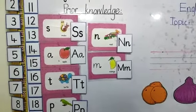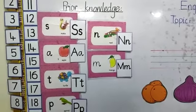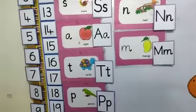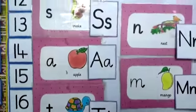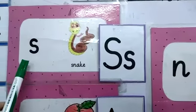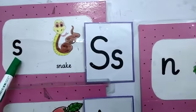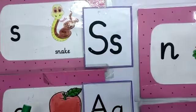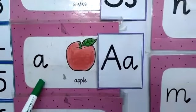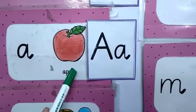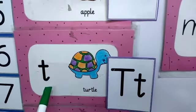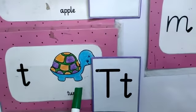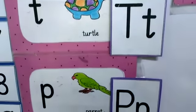Before that, we'll do the recap of the letters which we've done before. So look at here. What is this? Which letter is this? Yes, it's S, snake. Well done. Which letter is this? Yes, it's A, apple. And which letter is this? Yes, you tell me. Very good, T, turtle.